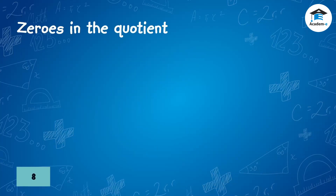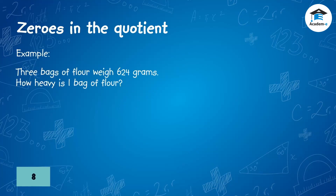Zeros in the quotient. Example: 3 bags of flour weigh 624 grams. How heavy is 1 bag of flour? Divide the hundreds by the divisor: 6 divided by 3 is 2. Put the number 2 above the number 6.